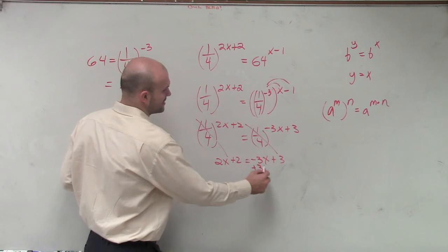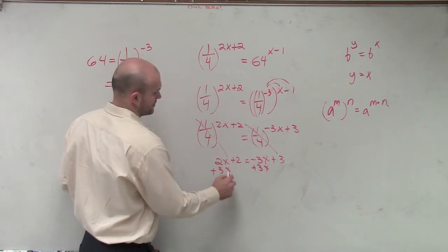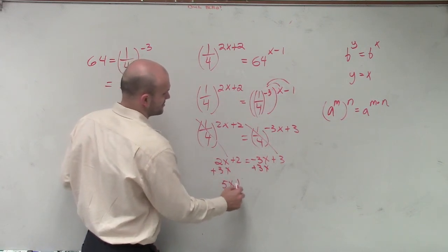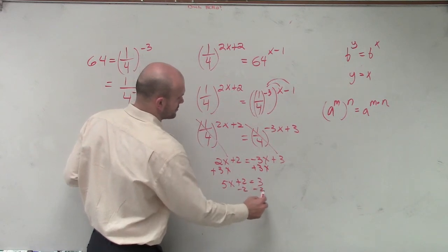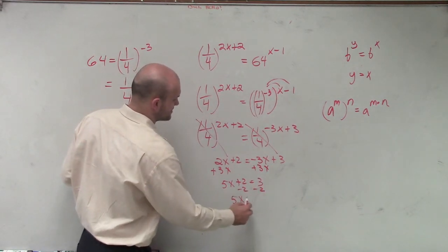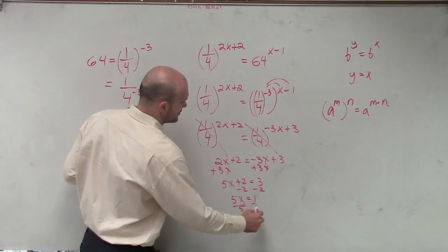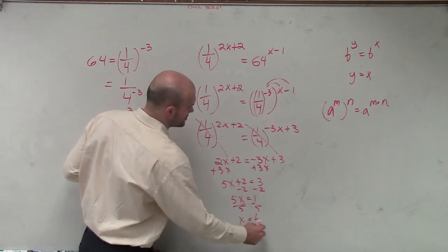So therefore, I add 3x, and I get 5x plus 2 equals 3, subtract 2, and I get 5x equals 1, divide by 5, x equals 1 over 5.